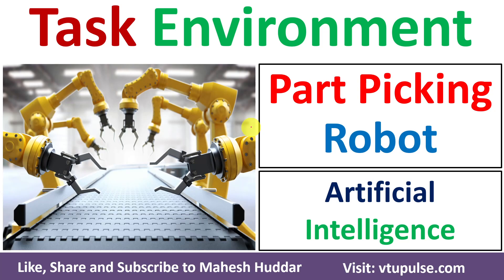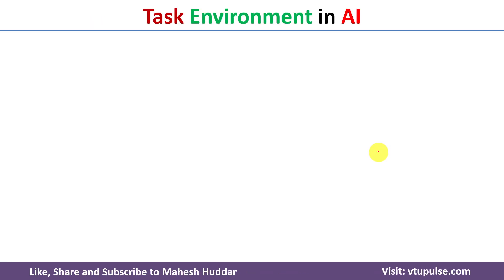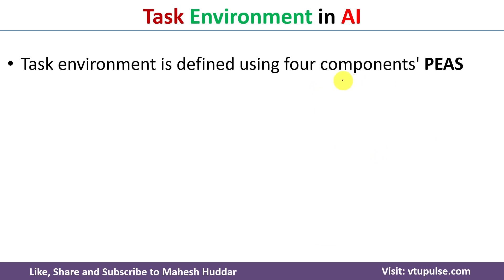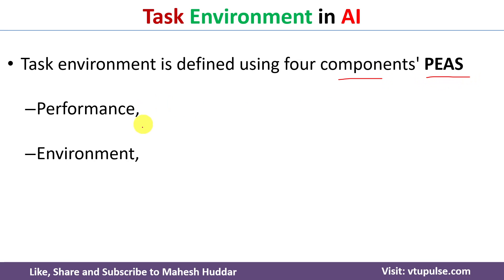Welcome back. In this video, I will discuss task environment in artificial intelligence with the help of a simple example. Task environment in AI is defined using four components called PEAS, where P stands for Performance, E stands for Environment, A stands for Actuators, and S stands for Sensors.